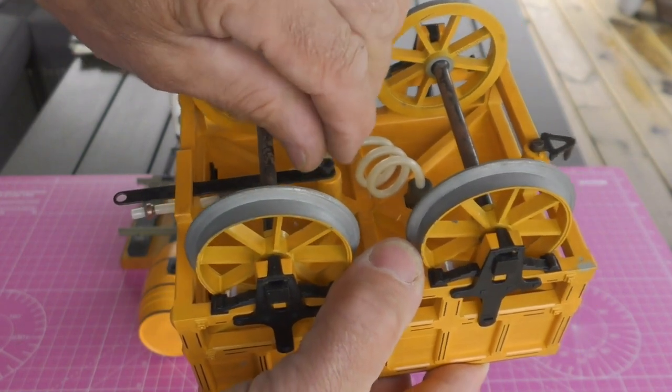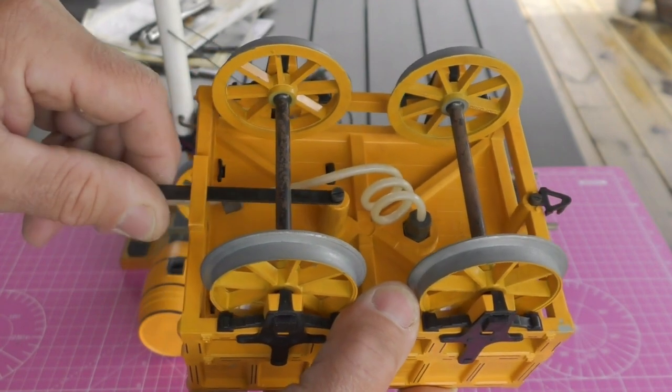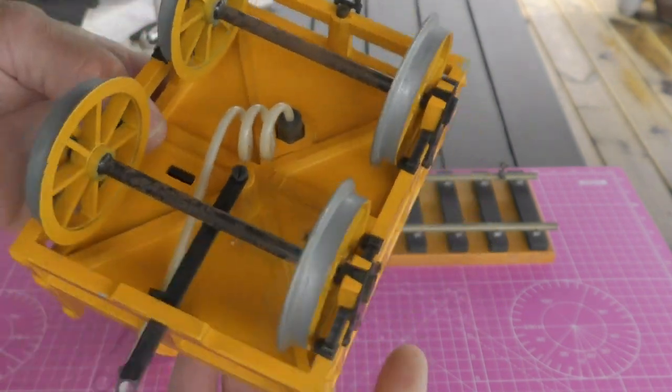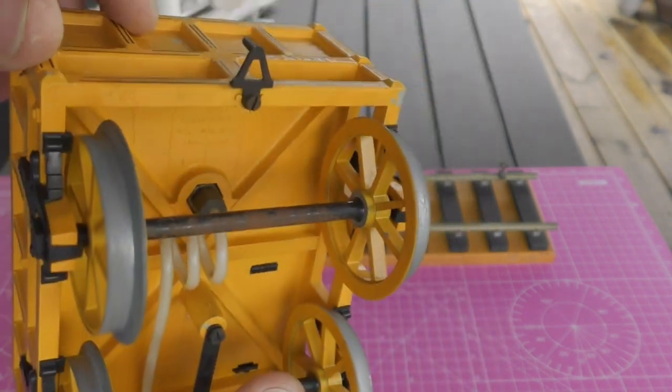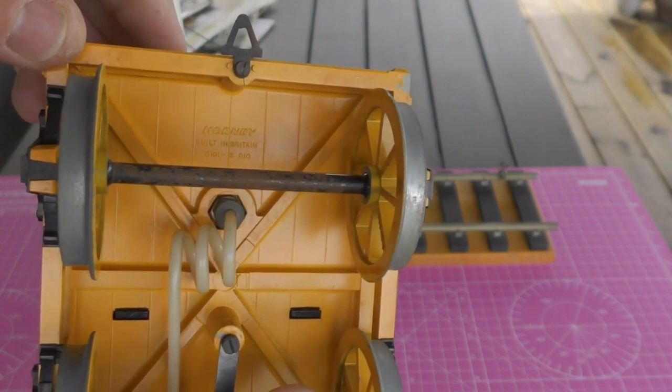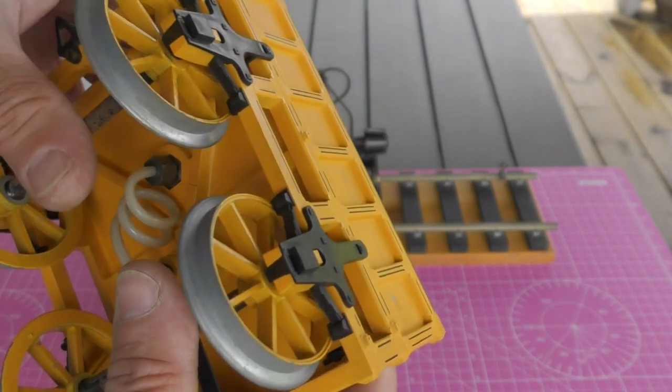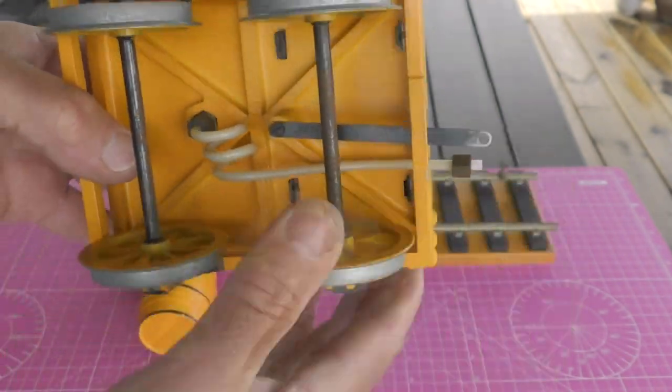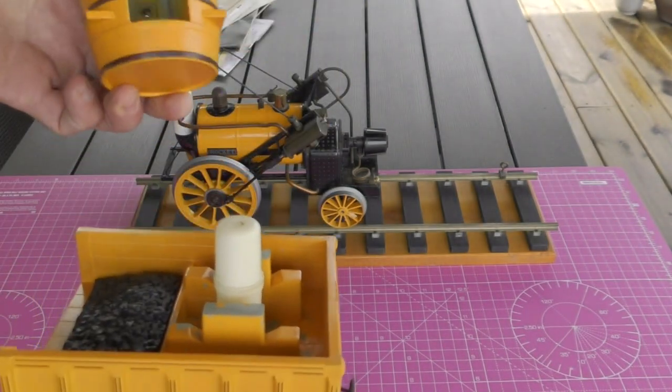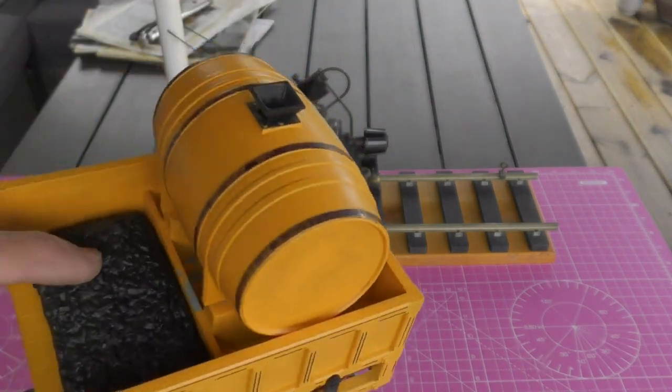There is writing on there, Hornby, and then built in Britain, and I think it says G101. Wheels revolve quite nicely. Anyway that's the tender and the gas tank. And then of course we've got this barrel which just slips over, so the whole thing looks quite good. Bit of a coal load in there.